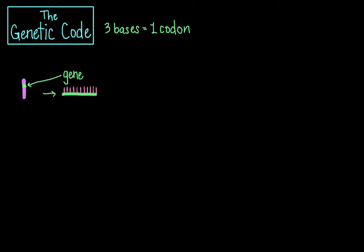This mRNA then gets translated by a ribosome into a chain of amino acids, otherwise known as a polypeptide. In this mRNA, each set of three nucleotides is a codon and corresponds to a particular amino acid. So the question is: how exactly do you get from a chain of nucleotides in RNA to a chain of amino acids in a protein?